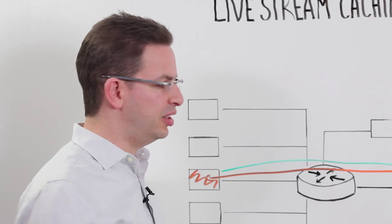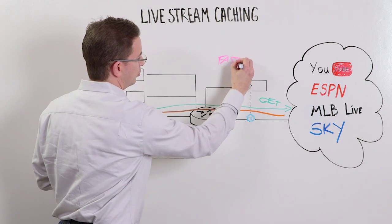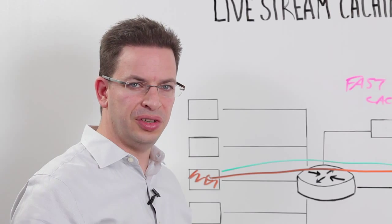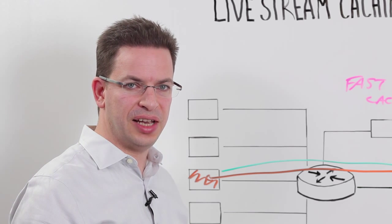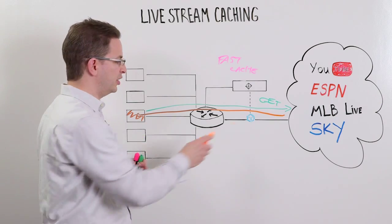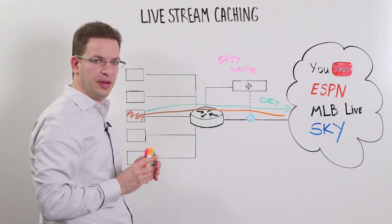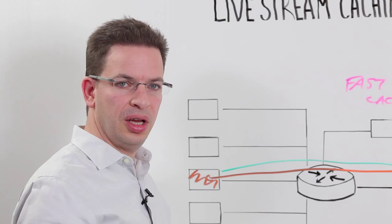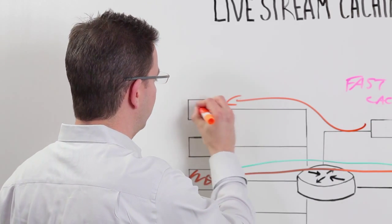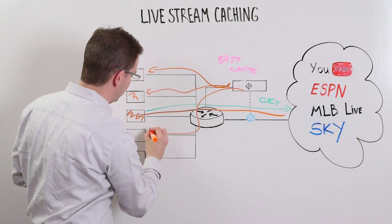With the live stream identified and the event marked as popular, the Qubi series device switches into fast cache mode. In this mode, everything the device does has to operate much faster because of the live nature of the content. We use the content coming from the original seed stream and populate it in the high-priority storage area of our cache. As more subscribers want to view the same live event, the Qubi series is then able to stream that event to every other subscriber in this network coverage area.